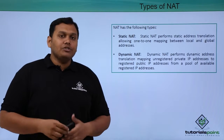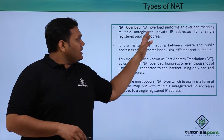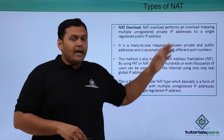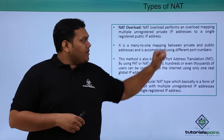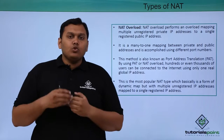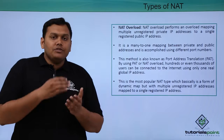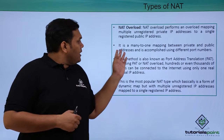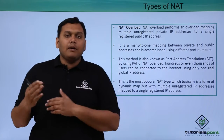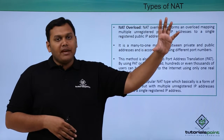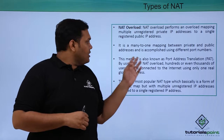The third type is NAT overload. NAT overload performs mapping of multiple unregistered IP addresses to a single registered global or public IP address. It is a many-to-one mapping between private and public — meaning many private IP addresses are mapped to one public IP address.